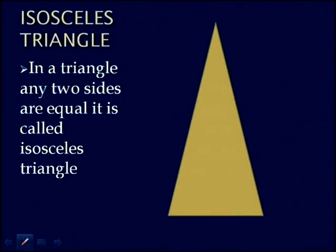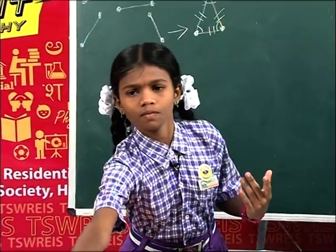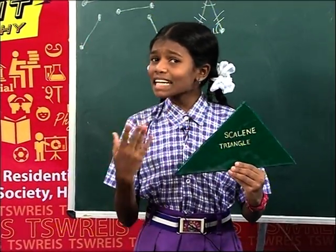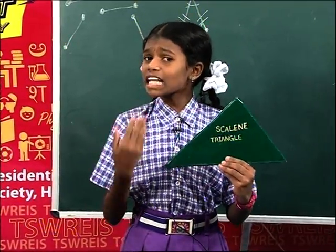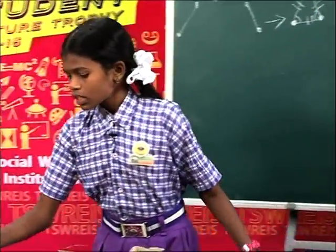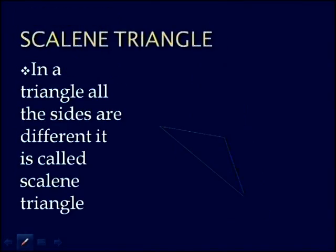See on the screen. In a triangle, if any two sides are equal, it is called an isosceles triangle. In a triangle, if all three sides are different, it is called a scalene triangle. This is the picture of a scalene triangle.